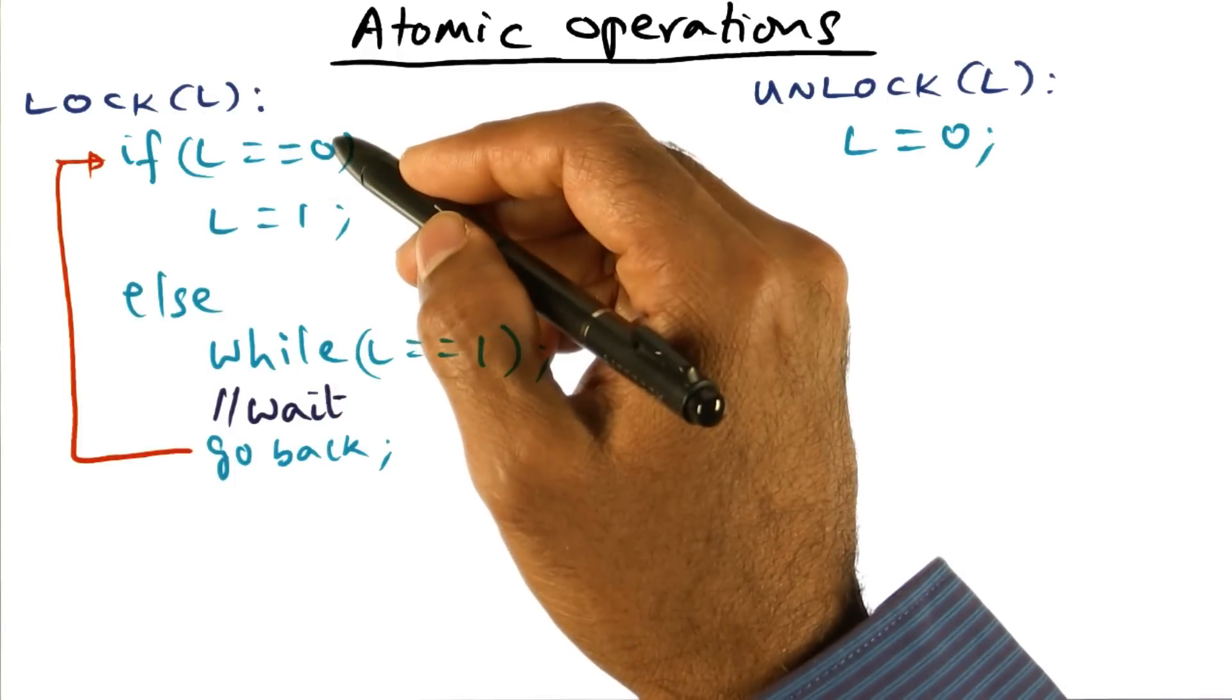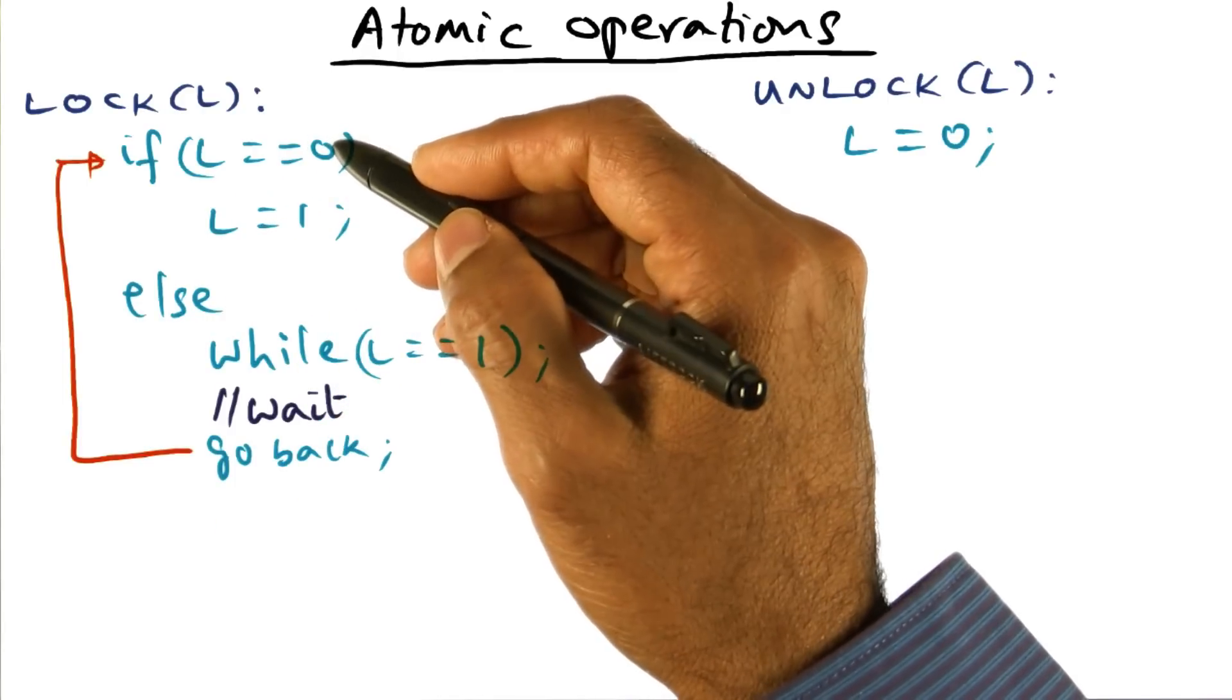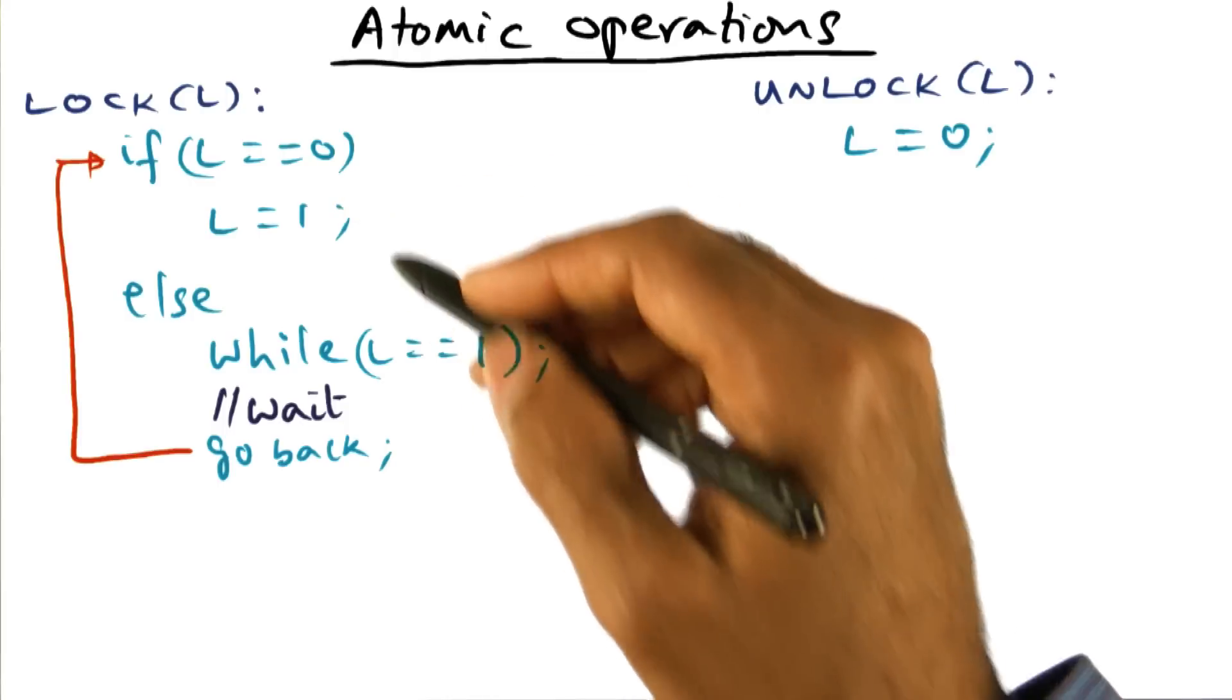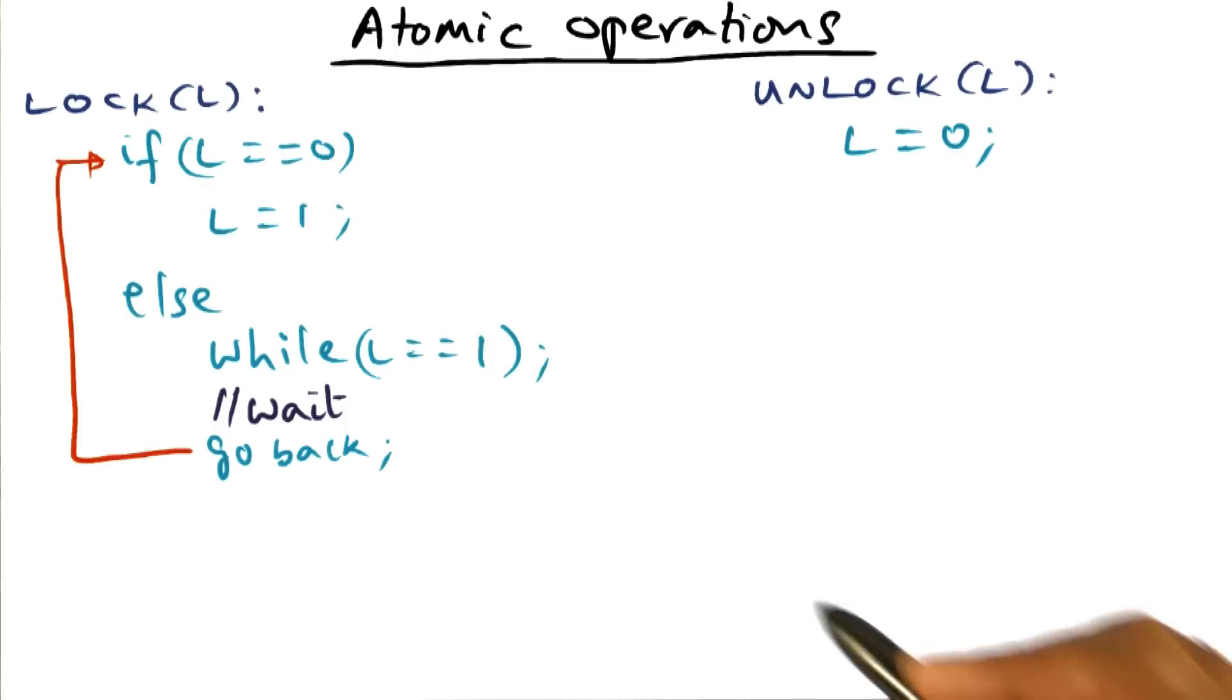I can go back, double check to make sure it is still zero, because somebody else could have gotten in the middle. If nobody else has gotten it, then I can set it to one. So this is the idea of a simple, very simple-minded implementation of a lock algorithm.